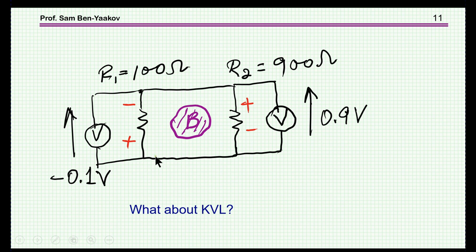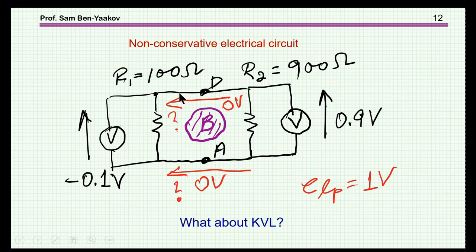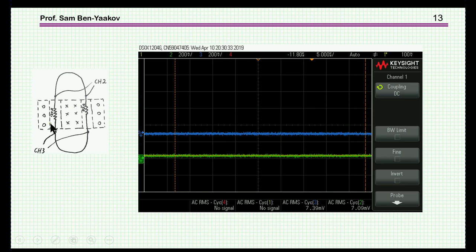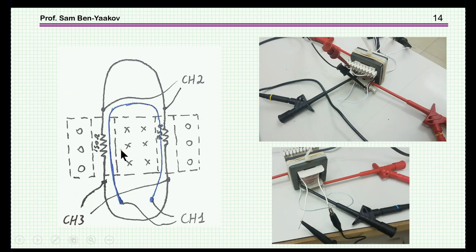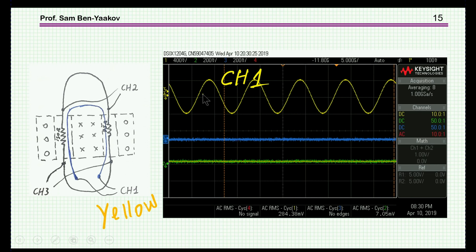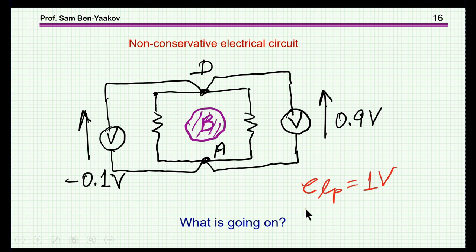You might wonder if there's some induced voltage at the junction — is it zero? Well, it is zero, and we've actually measured it. Here's the double E-core with one probe and another probe showing zero. We have a sensing loop to confirm there is excitation, and then we measure here and here. Lo and behold, with the excitation present, the voltage across this line is zero. And if you hook up two voltmeters, you also get 0.9 and minus 0.1.